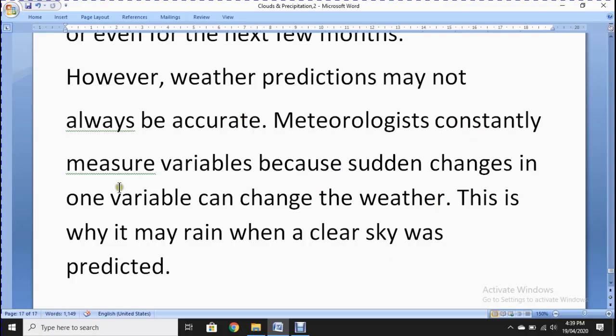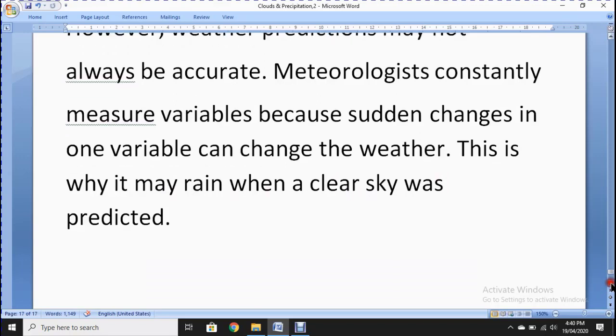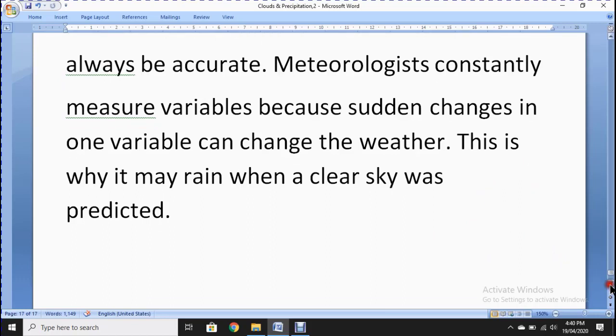Meteorologists constantly measure variables because sudden changes in one variable can change the weather. Maybe even one variable can change the flow of air or the humidity. It can change the whole weather. This is why it may rain when a clear sky was predicted. Sometimes they say that outside the sky is clear and there is no chance of rain but the rain should be started soon.